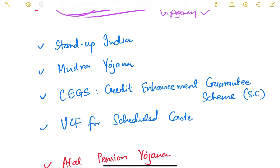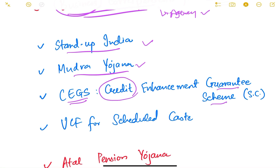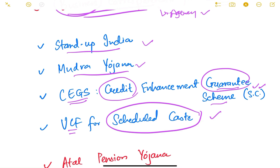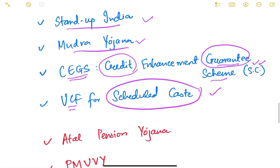To give easy access to credit for new businesses and startups, several schemes were launched: Startup India, Stand Up India, and MUDRA Yojana. The Credit Guarantee Scheme (CGS) provided credit guarantees for Scheduled Caste people, and the Venture Capital Fund for Scheduled Castes was introduced by the Government of India to give them access to funds for starting businesses.